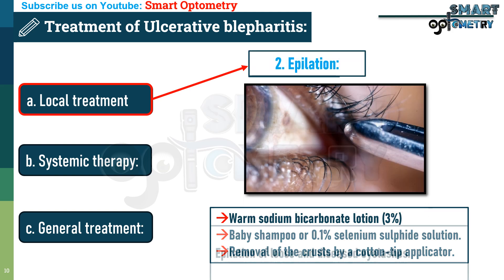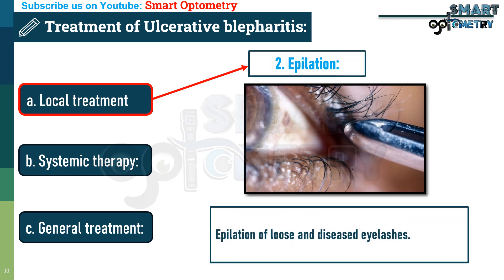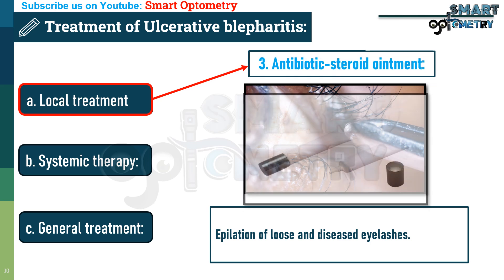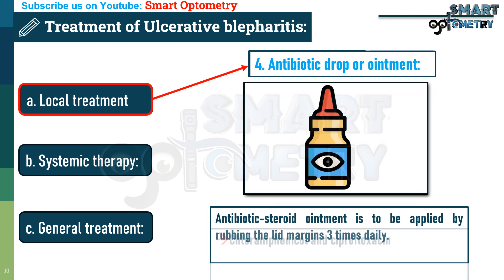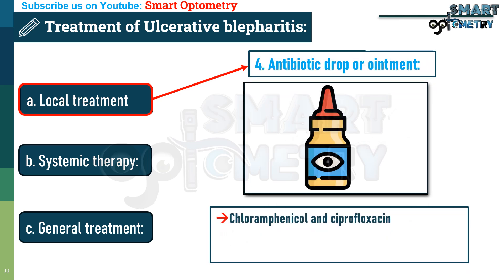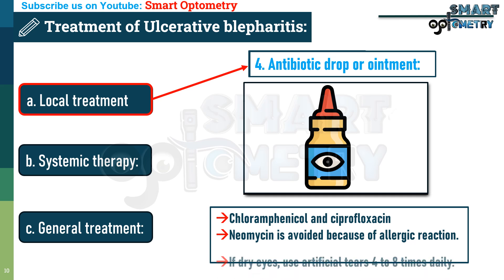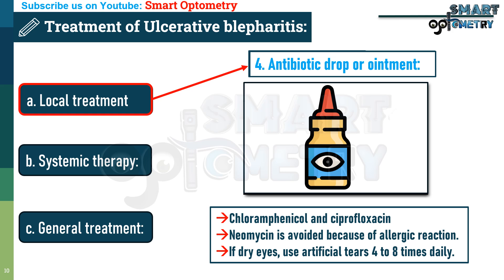Epilation of loose and diseased eyelashes is performed. Antibiotic-steroid ointment is applied by rubbing the lid margins 3 times daily. Antibiotic drops or ointment are added — chloramphenicol and ciprofloxacin are most effective against Staphylococcus aureus; neomycin is best avoided due to a high incidence of allergic reactions. If associated with dry eyes, use artificial tears up to 8 times daily.